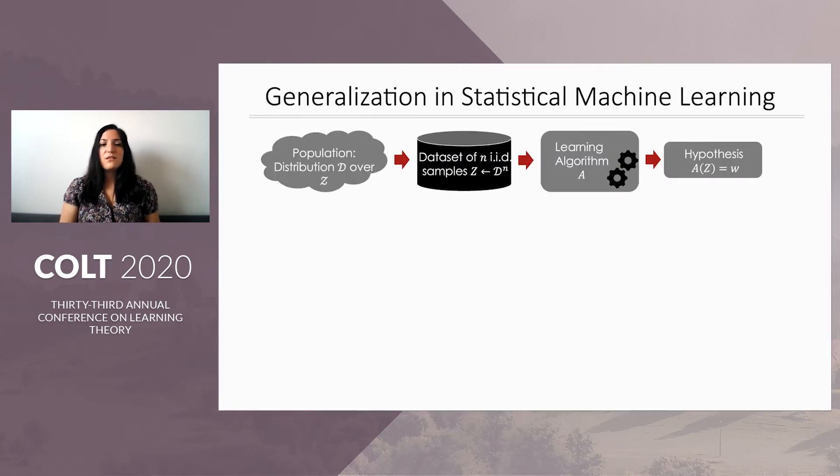Let us first recall the statistical machine learning setting. We have a space of examples Z and a distribution D over the space, and this represents the population about which we want to learn. Then we draw a sample set of n IID samples from the distribution D, and let's call that Z, and we feed that sample set to a learning algorithm A. The learning algorithm then returns a hypothesis or model A of Z, which we often denote by W.